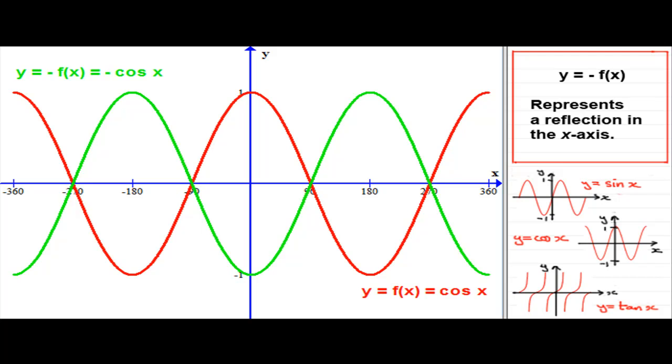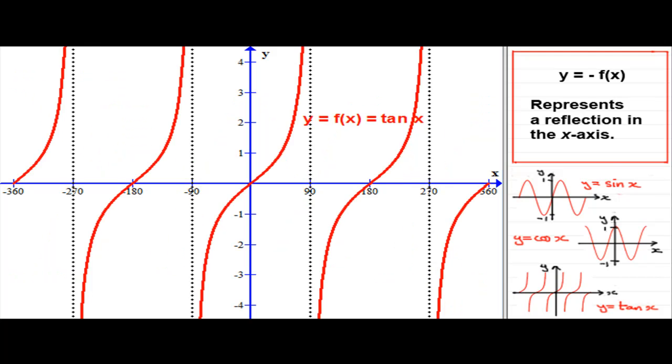We have one more to do, and that would be the graph of y equals tan x. So here's the graph of y equals tan x, f of x being tan x. We've got the asymptotes drawn in where the graph approaches these lines—at minus 270, minus 90, 90, and 270 degrees. You should be familiar with this graph anyway.